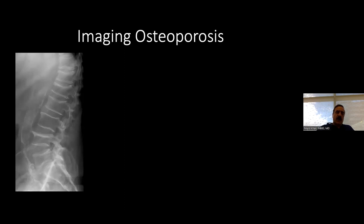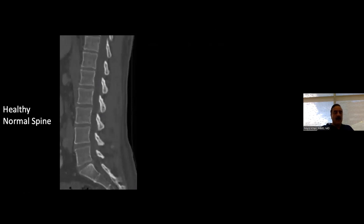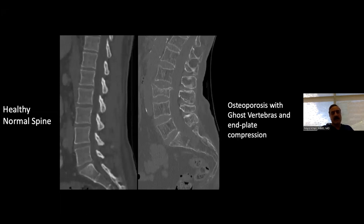Regarding imaging of osteoporosis: we get plain radiographs and see these 'ghost vertebras' — so thinned out you can barely differentiate them from soft tissue. Healthy bone on CT should look quite dense. This is the appearance of osteoporosis on CT with a compression fracture — your typical ghost vertebra. You can see increased fatty content of the vertebral bodies, thickened trabeculae at times, and loss of trabecular pattern in some parts of the vertebral bodies.